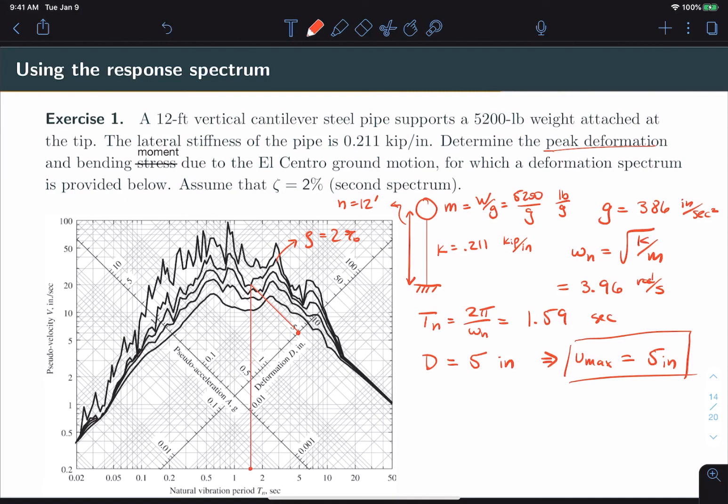Then, for the bending moment, we can remember that that is proportional to pseudo-acceleration from the equivalent static force discussion. So, we can find that on this axis. And I'm going to call that approximately 0.2 G's. Okay, so our maximum lateral force, F sub s, is equal to m times a. And our maximum base moment is equal to h times F of s. And that will result in 150 kip inches.